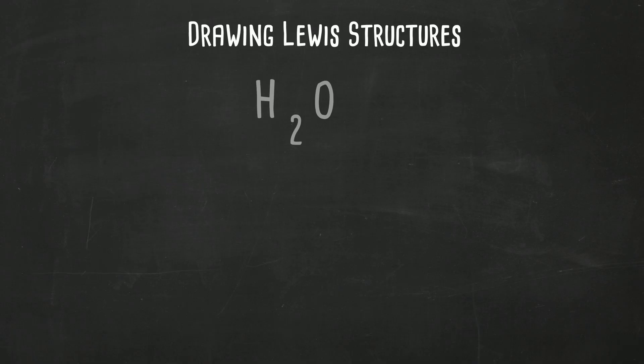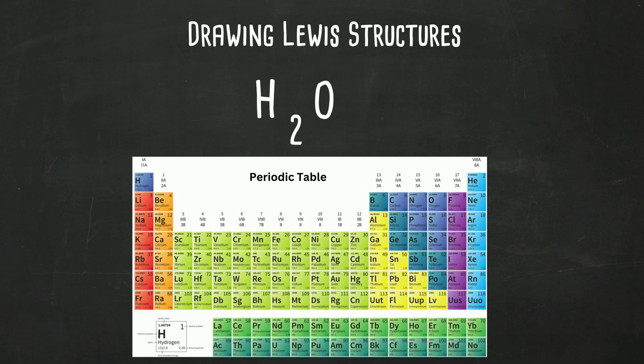Let's start with H2O. First we need to count the number of valence electrons. We can do this by going to the periodic table. Group one has one valence electron.